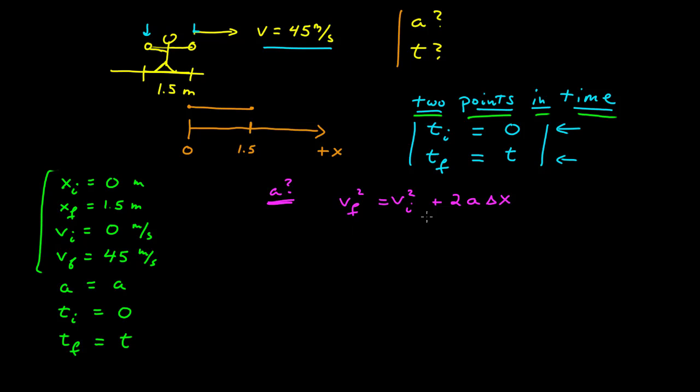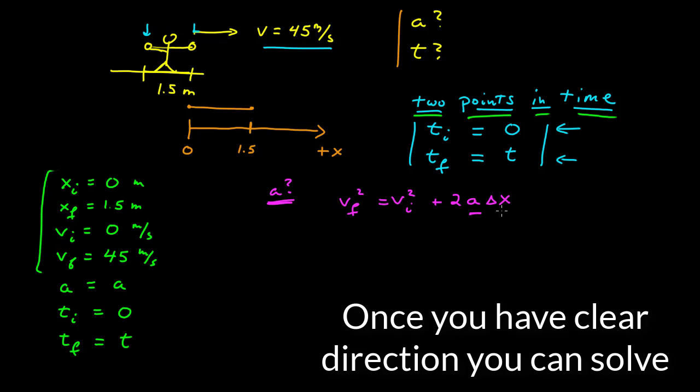What does this have? I know v sub f, I know v sub i, and I know the displacement. I know delta x, which is x sub f minus x sub i. I can use this equation to solve for a.